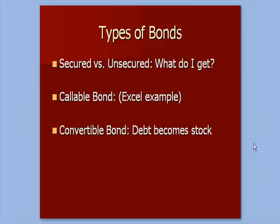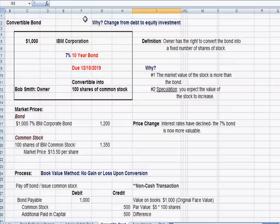We covered all types of bonds in the last video, number 12. At the bottom of that page we started talking about convertible bonds — taking debt (a bond) and converting it into stock. So we're going from having a creditor who owns debt to someone who is an equity owner with stock. The reason you would convert from bond to stock is to change from a debt investment to an equity investment.